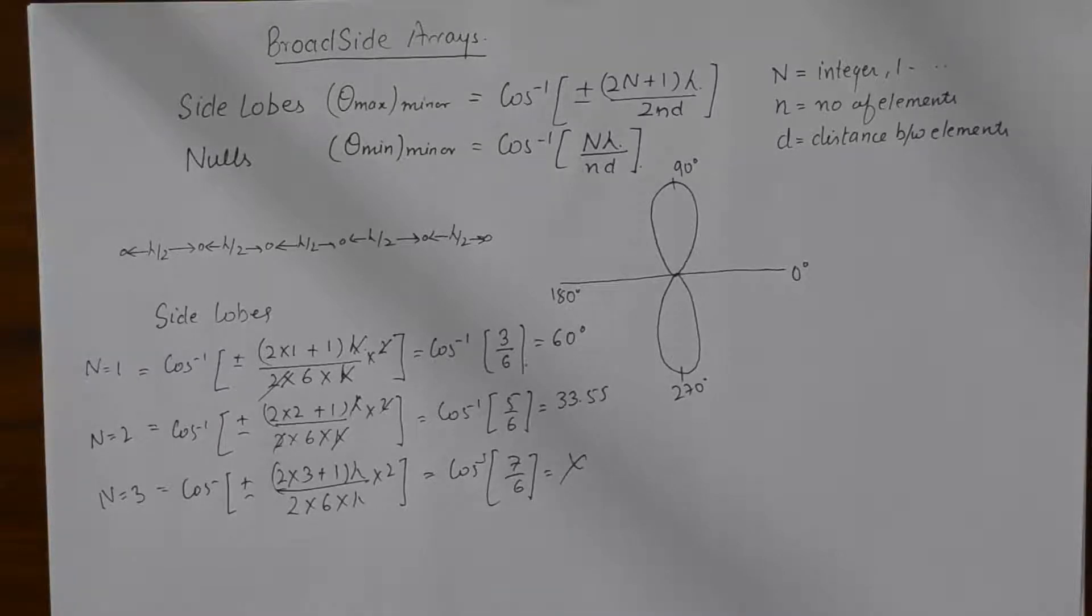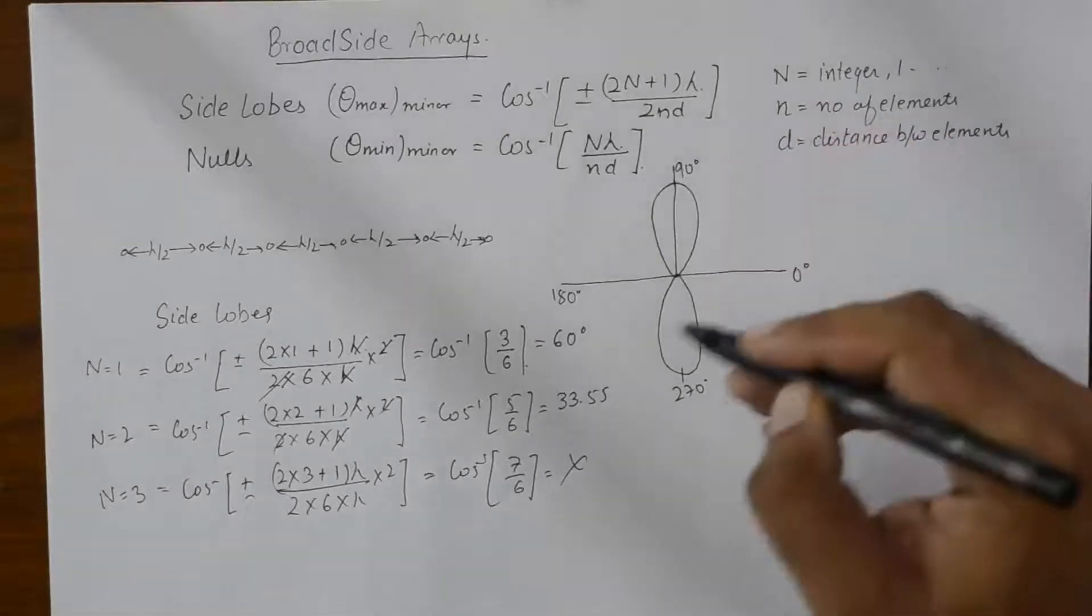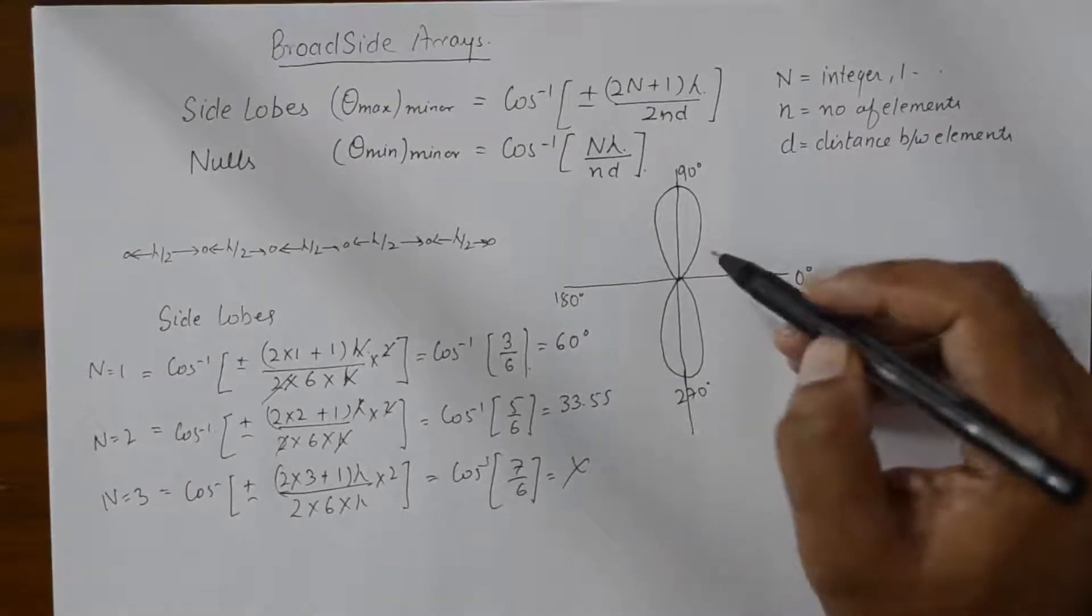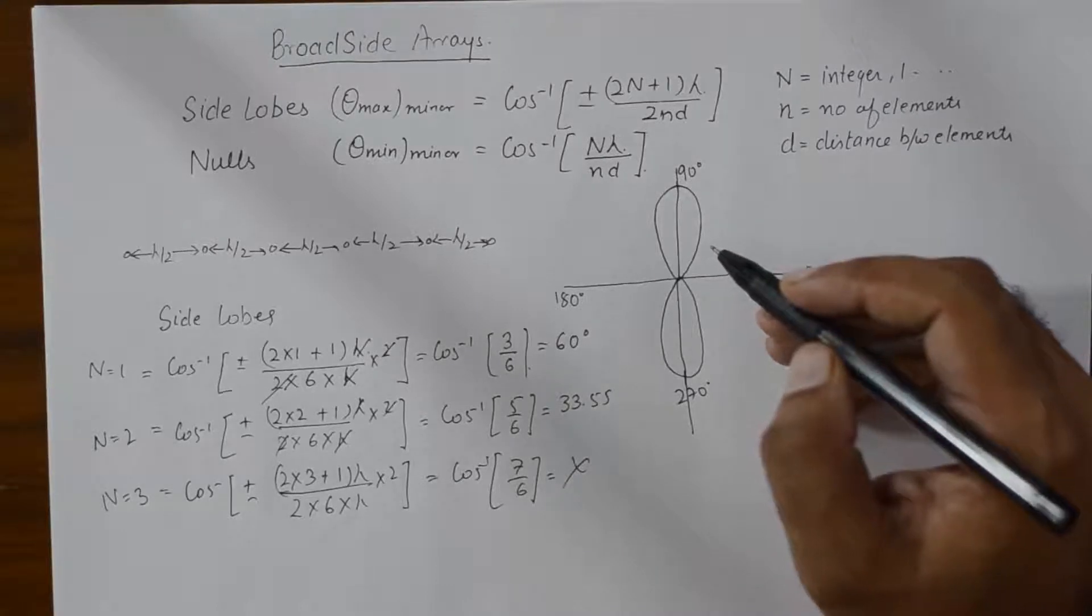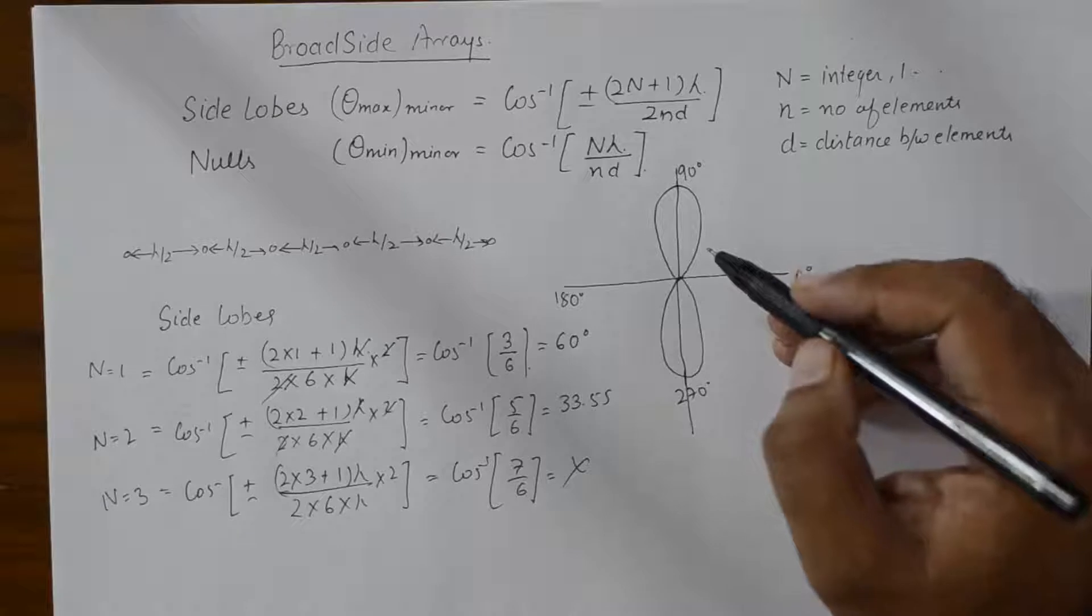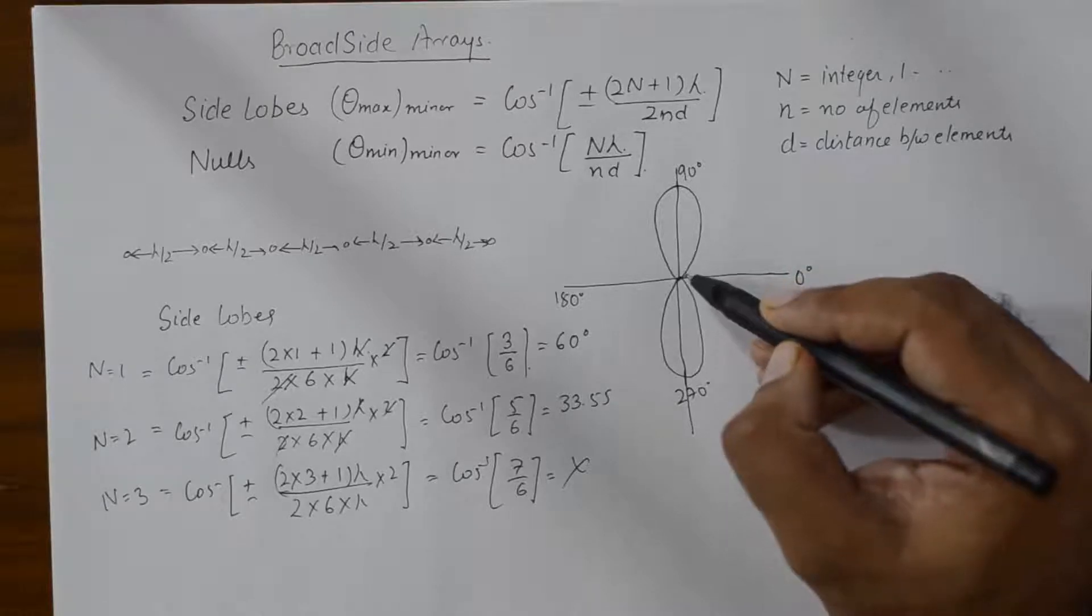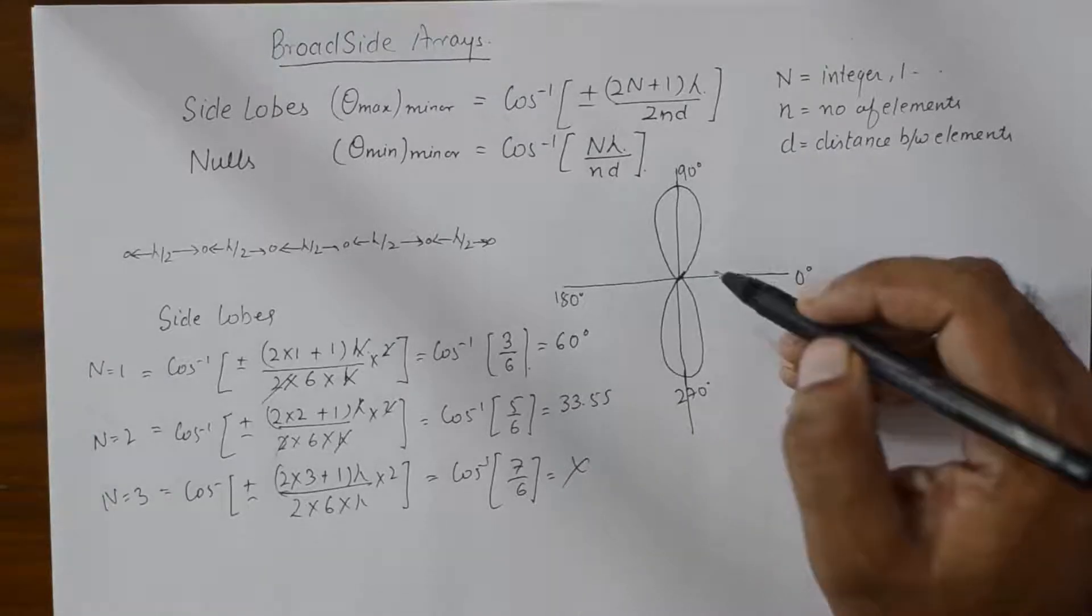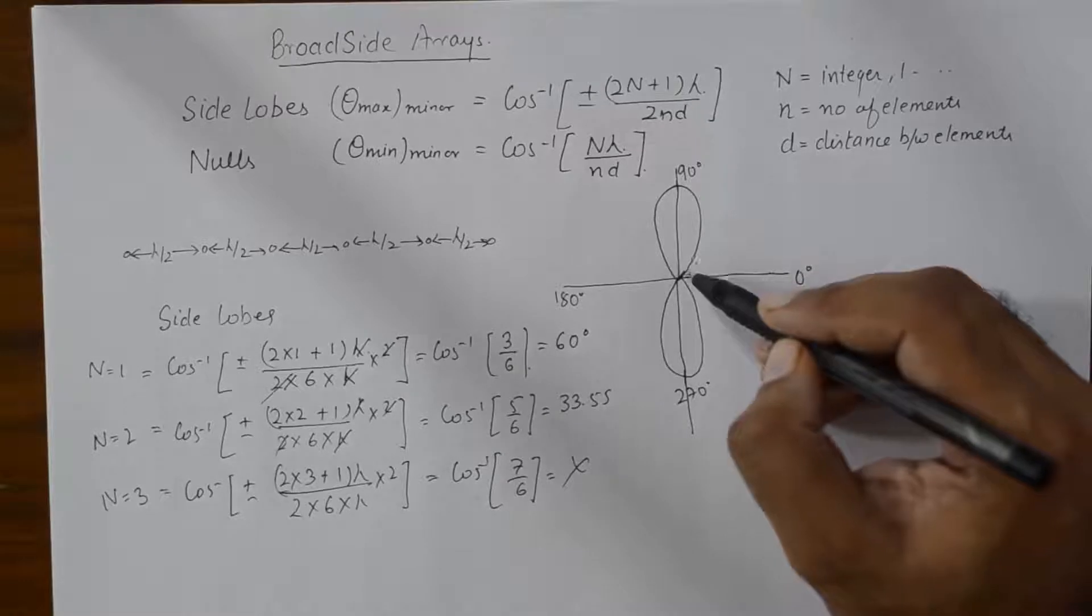So, there are going to be 2 side lobes in each quadrant and we can plot the other side lobes by mirror image and superimposing. For example, the first side lobe is going to be... Now, when the side lobes are present, the main lobe will be a little squashed up.